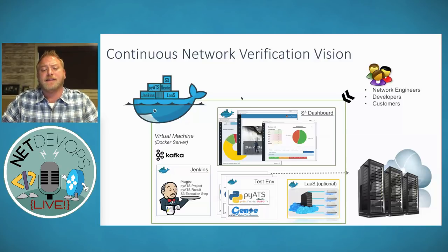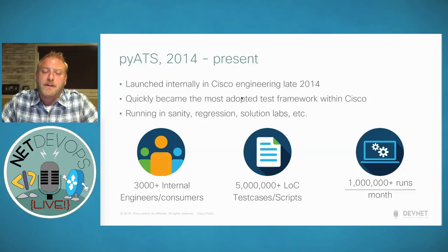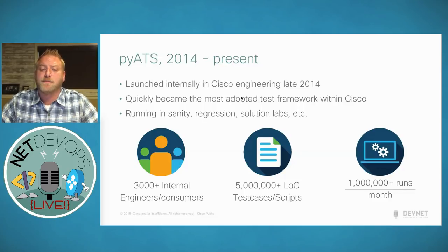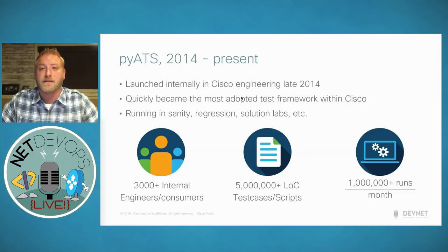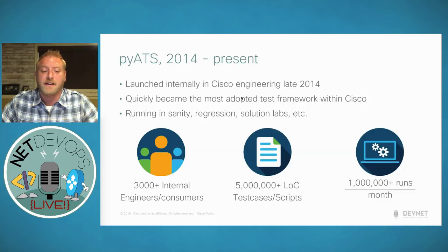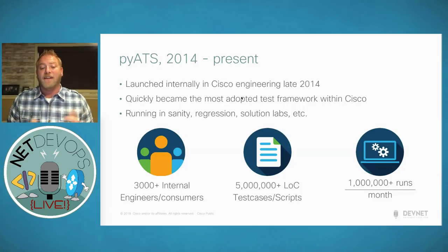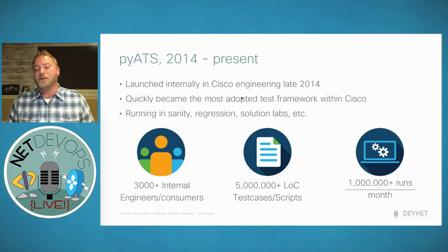When we talk about PyATS, it's important to note where this came from. Originally PyATS was a framework launched internally at Cisco to provide various product owners with a common framework they could use to test new features or do regression tests against new software versions for their platforms. This has been used in a big way at Cisco since 2014. We have over 3,000 engineers representing various products using the framework, and over 5 million lines of test cases to validate all platforms.